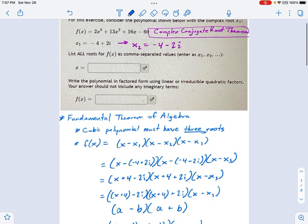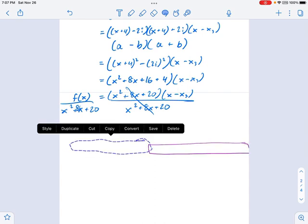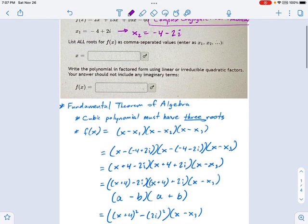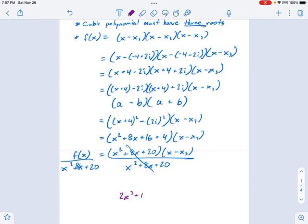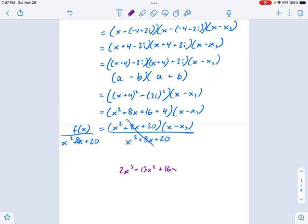Let's grab f of x. It's 2x cubed plus 13x squared plus 16x minus 60. I'm dividing that by x squared plus 8x plus 20. The method you're going to use for dividing is pretty straightforward. We're going to divide the leading terms. 2x cubed divided by x squared.